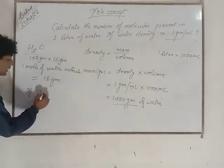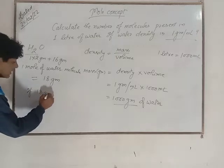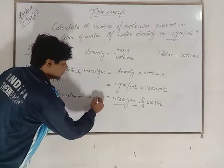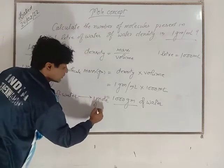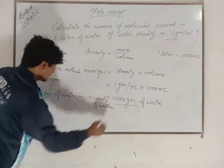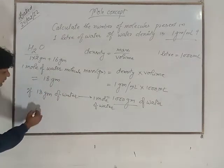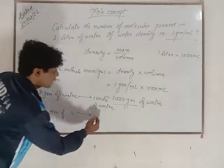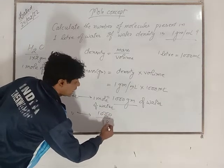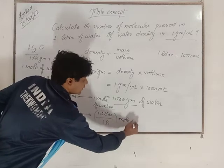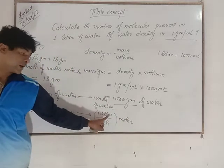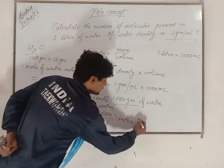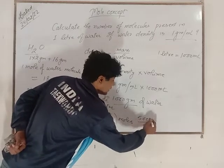Now, if 18 grams of water contains a certain number of molecules, then 1000 grams will contain more. In the simplest form, you will divide by 2. This will be equal to 500 divided by 9 moles.